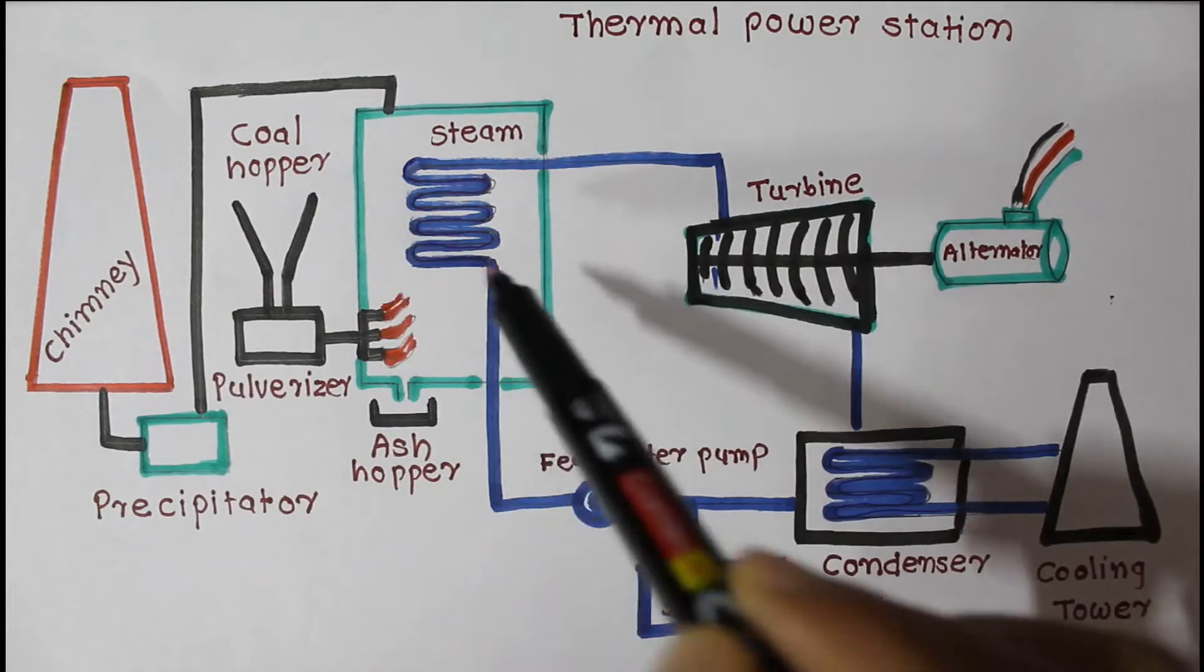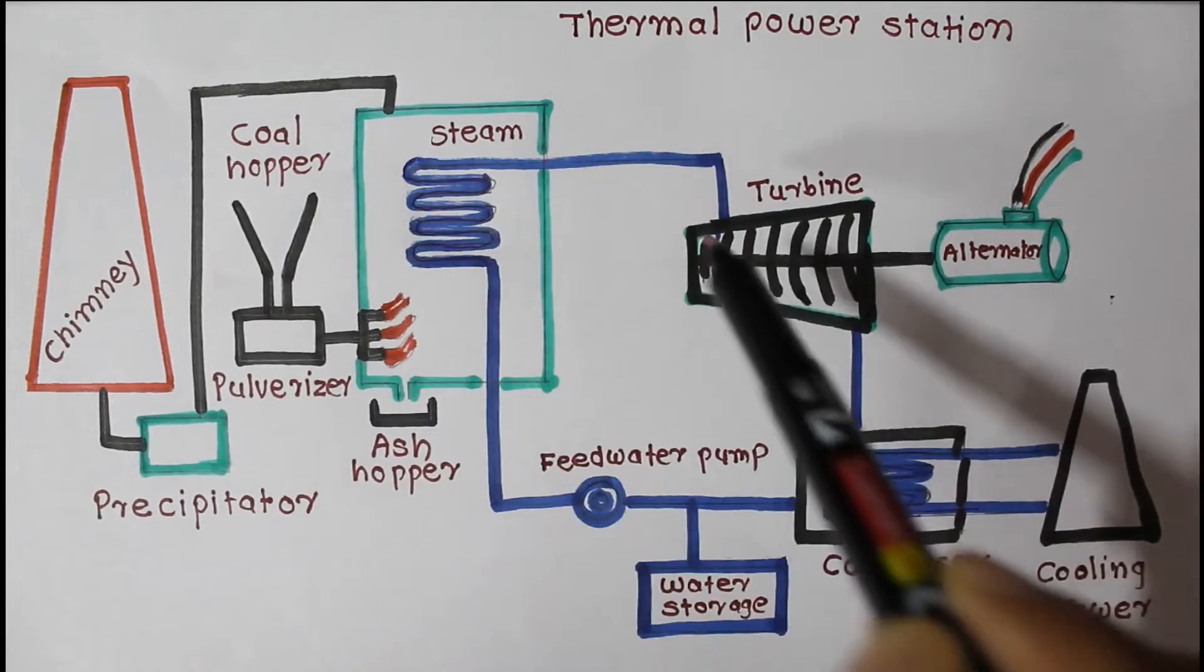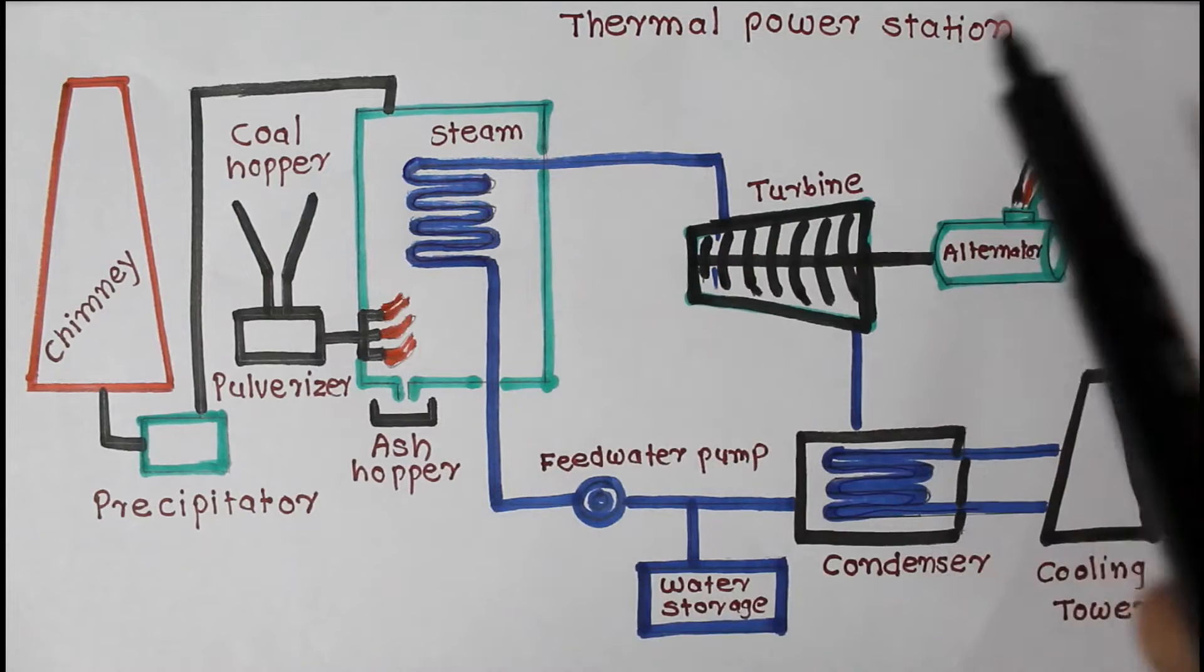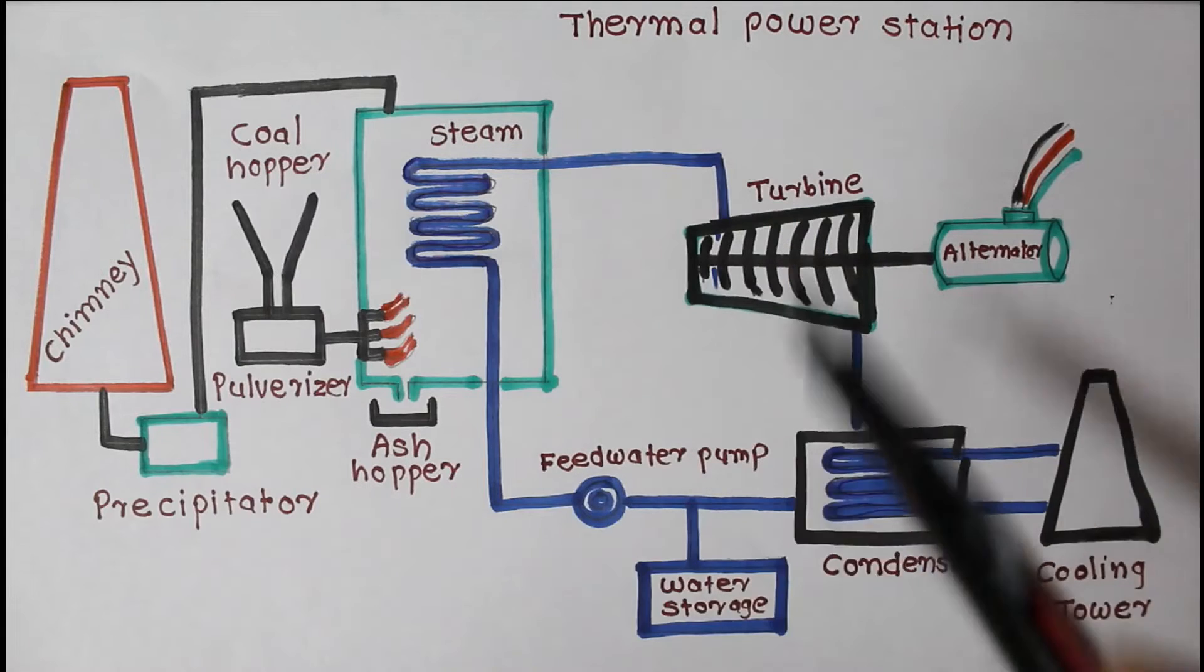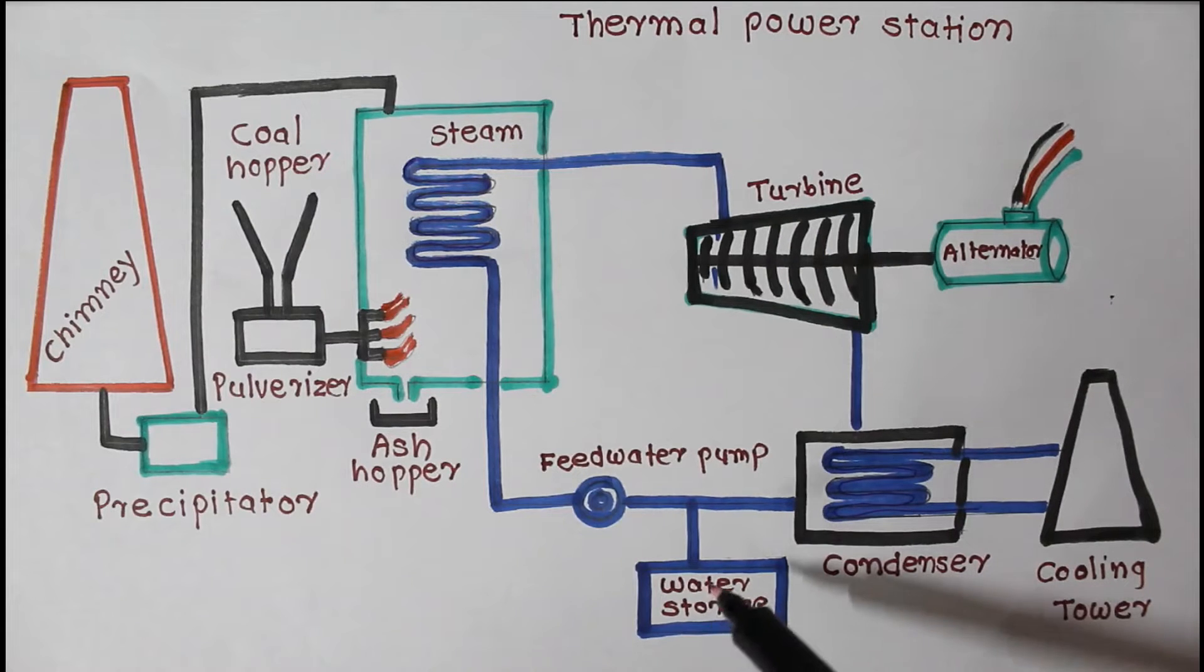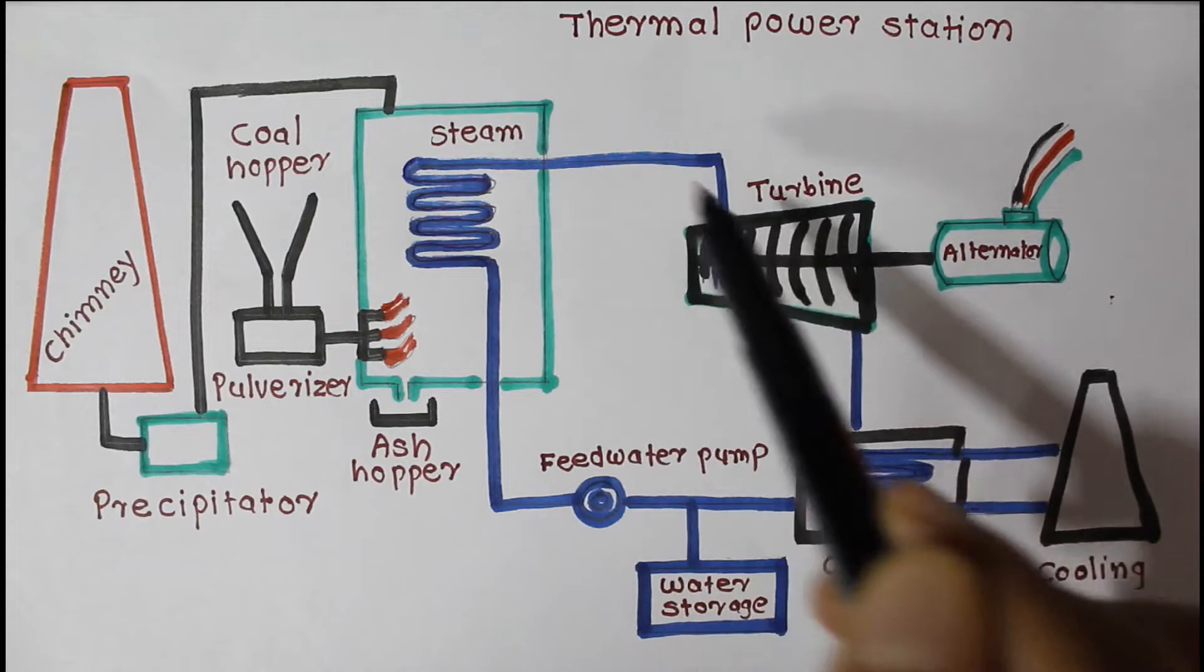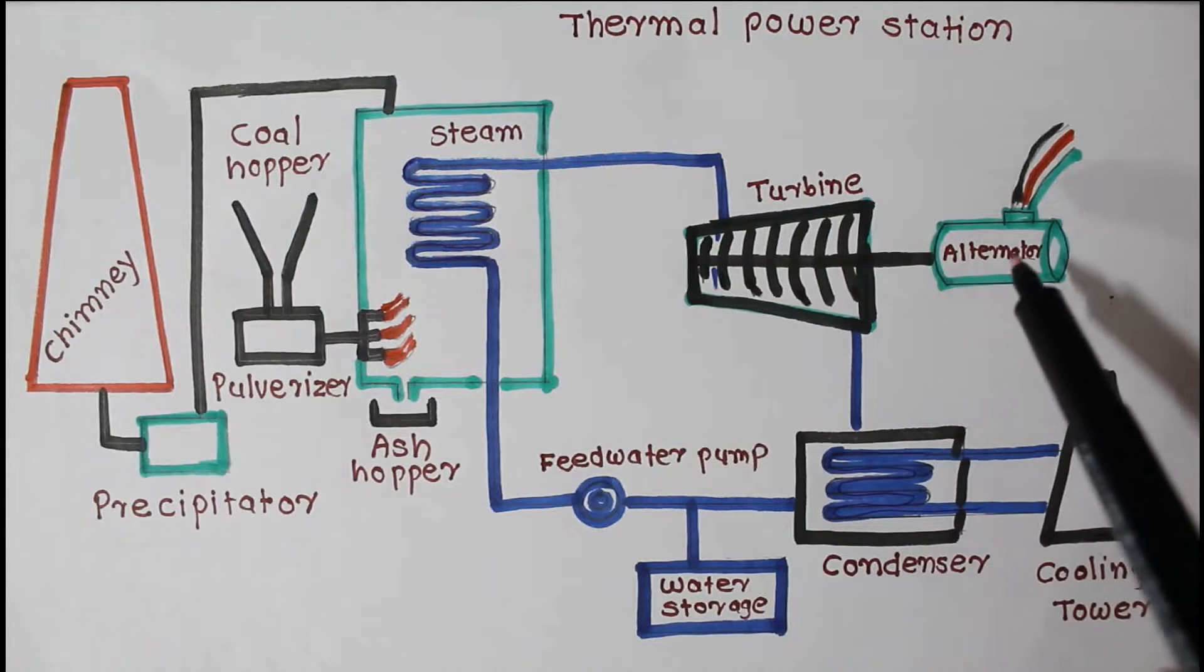Coal is burned in boiler which converts water into steam. In thermal power station, two storage required: one is coal and second water storage. The expansion of steam in turbine produces mechanical power which drives the alternator coupled to the turbine.